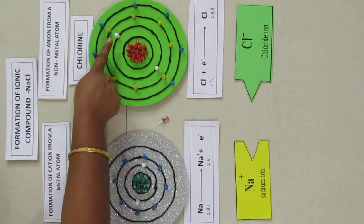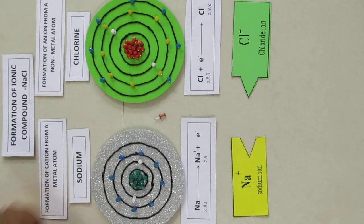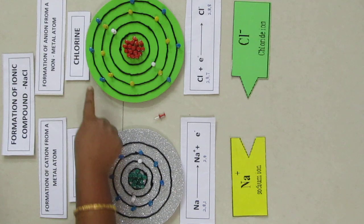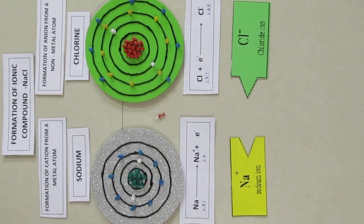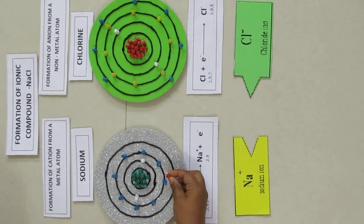Chlorine has 2 electrons in its K shell, 8 electrons in its L shell and 7 electrons in its M shell. If chlorine gains 1 electron from sodium,